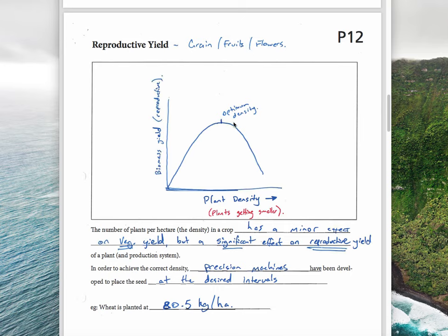As every plant gets smaller and smaller, you have less and less plants actually reaching full maturity. They can't actually reproduce properly because they're just not getting enough energy. There's too much competition between plants, so the reproductive growth or the reproductive yield drops off.